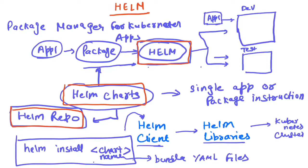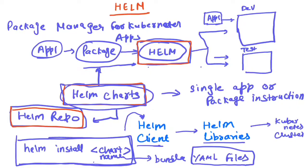That is all I wanted to cover at a high level. Helm is like a play store or app store which contains multiple package instructions. Those package instructions are bundled in the form of YAML files, and each package instruction is called a Helm chart. Whenever you have to install any Helm chart, you run 'helm install' followed by your chart name. The management of all Helm charts is done within a Helm repo, which can be a public or private repo. It helps you to automate the process of running or installing any kind of app or package within your Kubernetes cluster — the whole process becomes easy and you don't need to do anything manually.